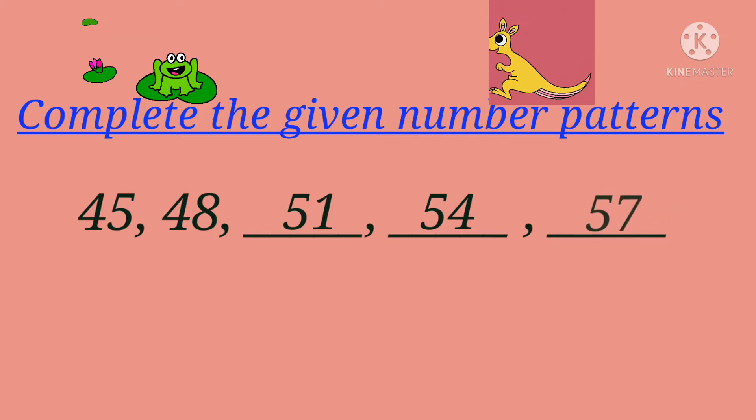54 plus 3 is 55, 56, 57. So our pattern is 45, 48, 51, 54, 57. We added 3 to every number.